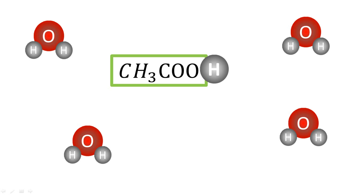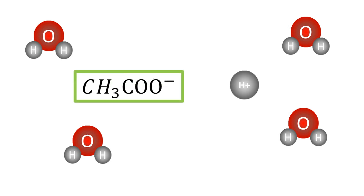When acids are in an aqueous solution, they tend to dissociate, releasing a proton and a negative ion. The weaker the acid, the fewer protons released to the medium. On the other hand, a stronger acid will have an increased probability of releasing a proton.